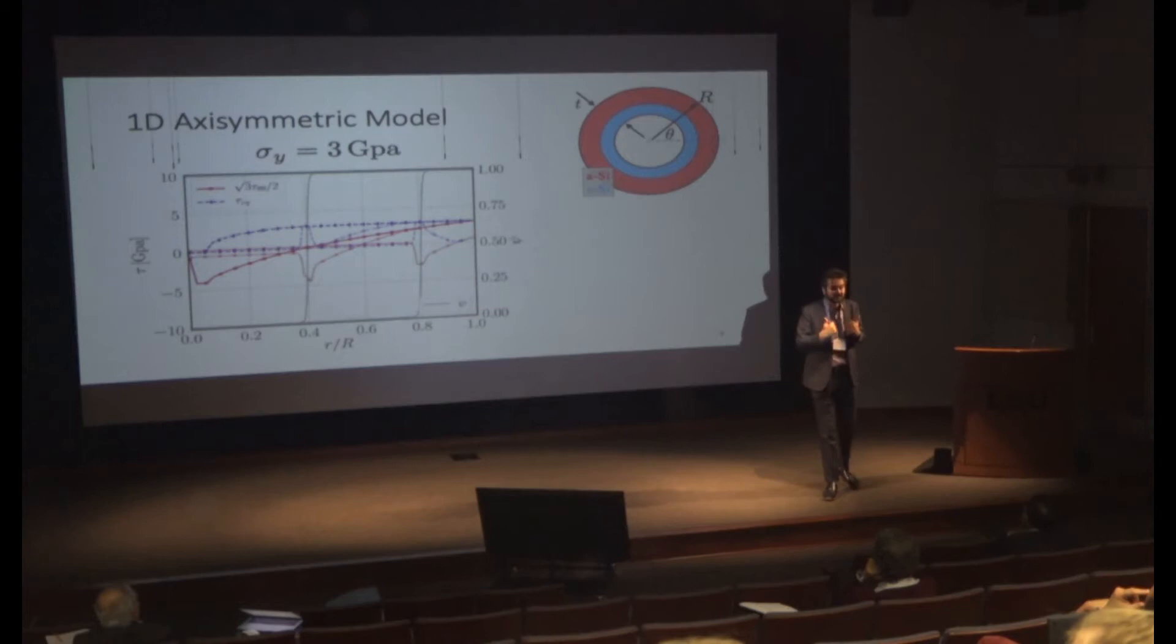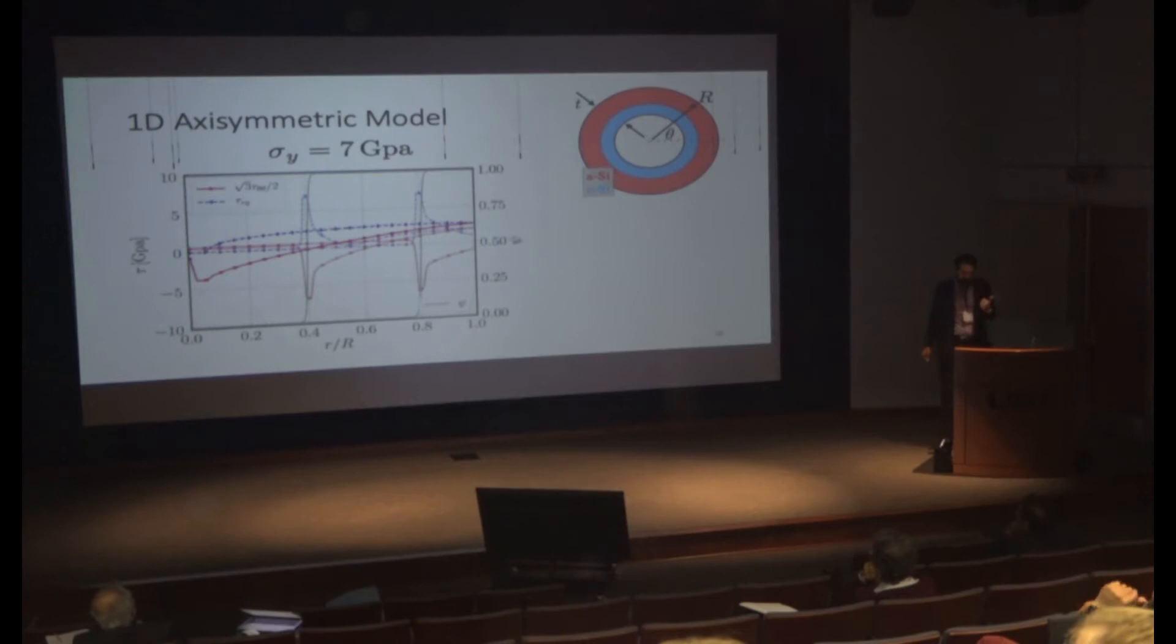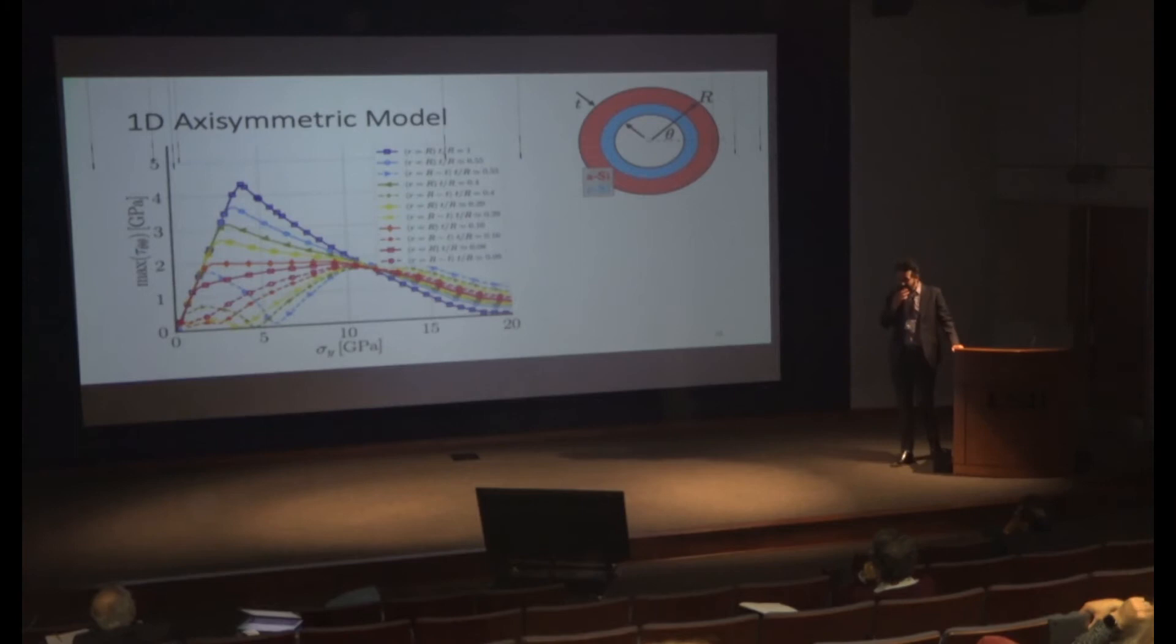If I make the yield strength larger, I can have a situation where I don't have that yield. So I can construct something like this from my axisymmetric simulations.